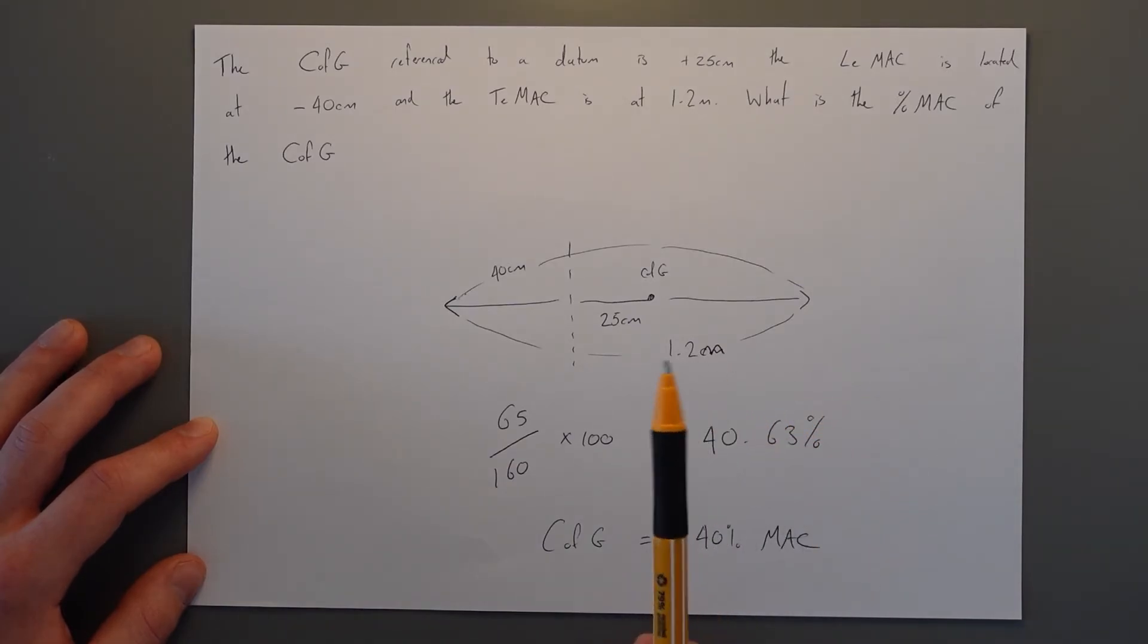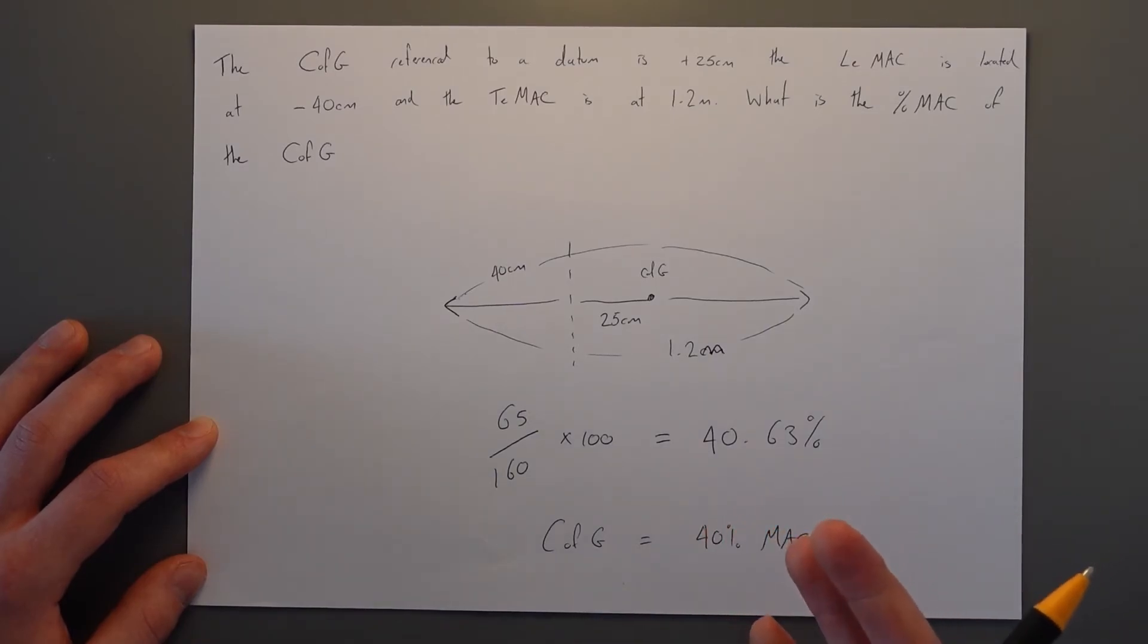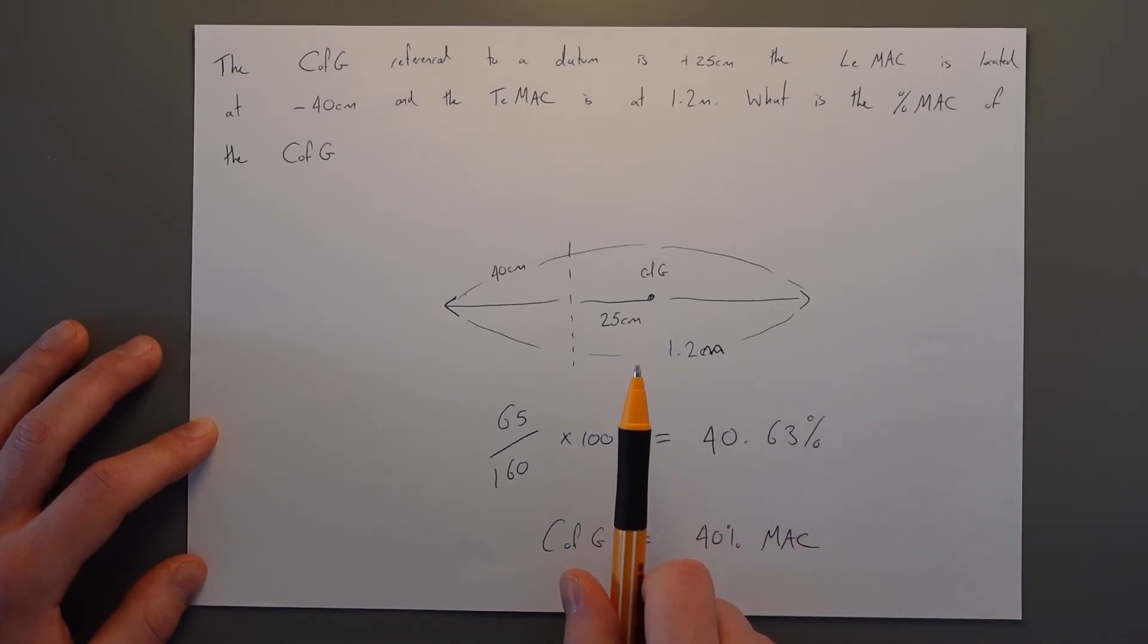The easiest method to move this percentage MAC is to move the traffic load, the cargo or the people. If we see the percentage MAC is too little, aka too far forward, then we move some of the traffic load further back in the aircraft and this pulls the centre of gravity further back. This is the reason that even if you're on an empty flight, you will need to sit near the middle of the plane in order to keep the percentage MAC from going too far forward or too far back.